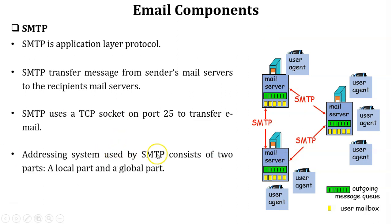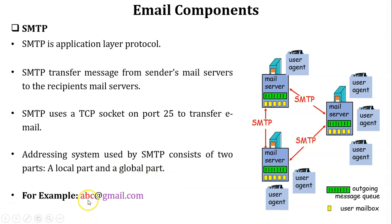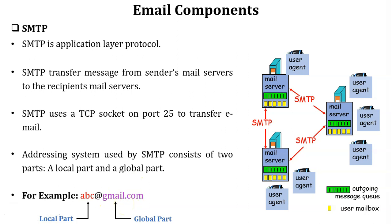The addressing system used by SMTP consists of two parts: the local part and the global part. For example, in the email address abc@gmail.com, 'abc' is the local part and 'gmail.com' is the global part. The local part is the user's unique ID. In the global part, '.com' is the top-level domain and 'gmail' is the second-level domain, which is the name of the mail server. The '@' sign divides the local part and global part in every email address.